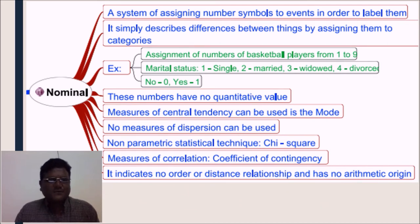Now, have a deep look on nominal scale. A system of assigning numbers involves to events in order to label them. It simply describes differences between themes by assigning them to categories. We have already discussed few examples of nominal scale. Now, take few more examples. Assignment of numbers of basketball players from 1 to 9. Now, in the game of basketball, just for the sake of identification of players, the numbers are assigned to them right from 1 to 9. Here, we can't say that the number given to the player that is 1 is the best player of that team. And the last number, that is 9, that player is not that much important.